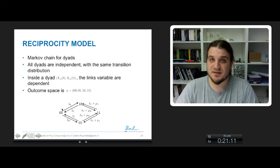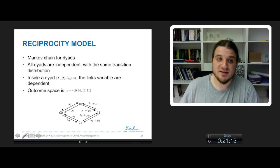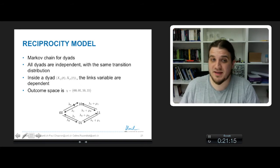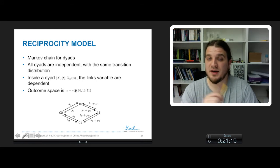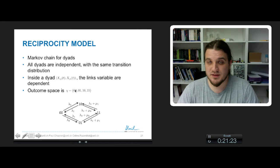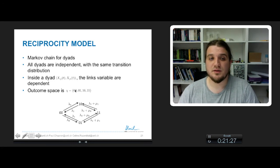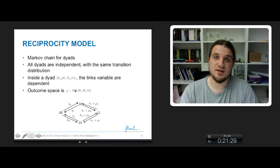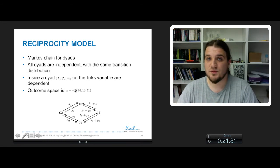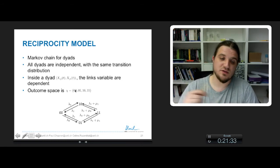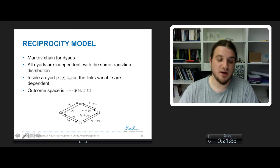The outcome space is a little bit more complicated. You have four different states. 0 0, there is no links, neither from i to j nor from j to i. 0 1, only one link in one direction. 1 0, the link in the other direction. And 1 1, two links, one from i to j, the other from j to i.